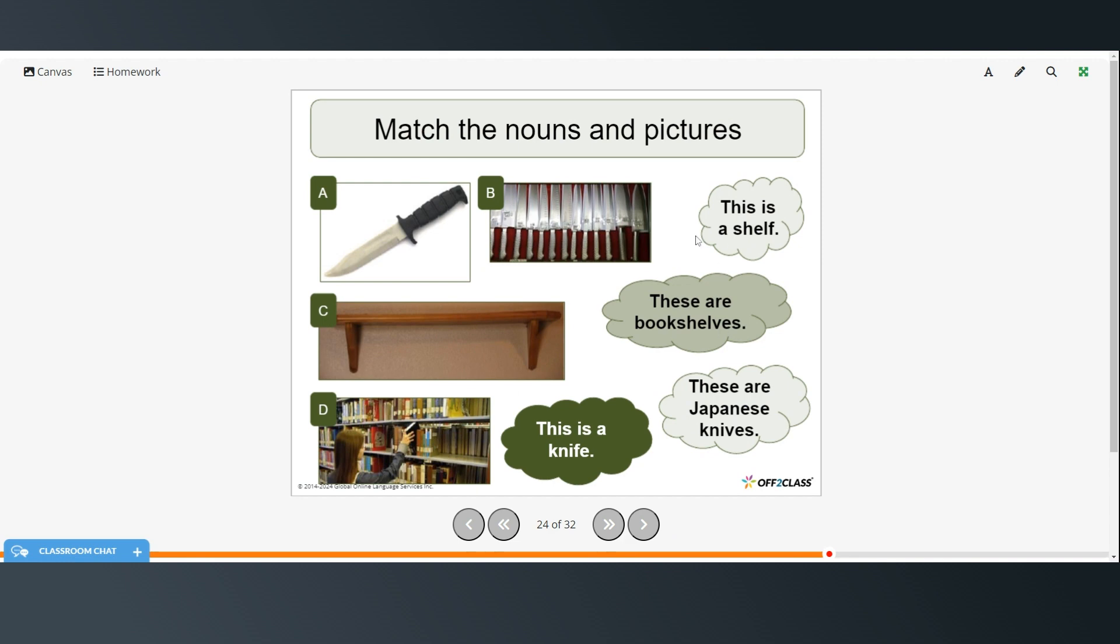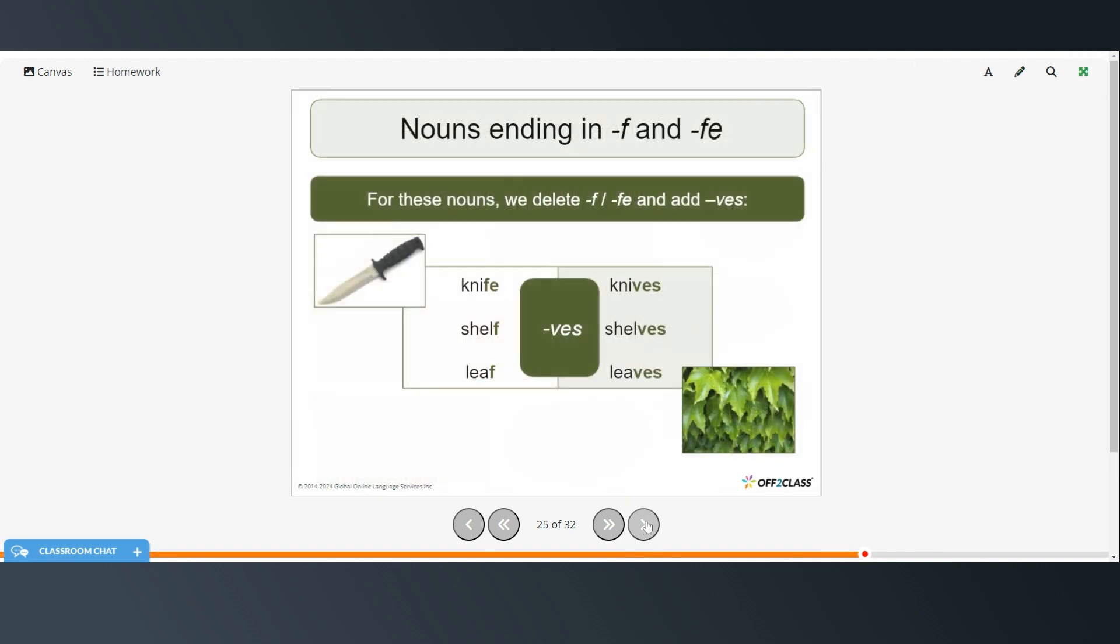Alright, so let's match the nouns with a picture. Okay, so picture A, this is a knife. Picture B, these are Japanese knives. Picture C, this is a shelf. And picture D, these are bookshelves. Alright, so now we have some nouns that end in either F or F-E. And so for these nouns, we remove F or F-E and add V-E-S. So knife becomes knives, shelf becomes shelves, and leaf becomes leaves.